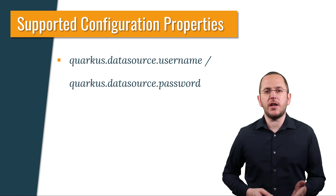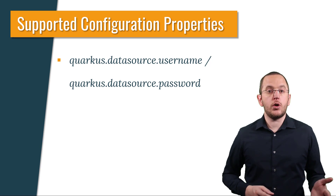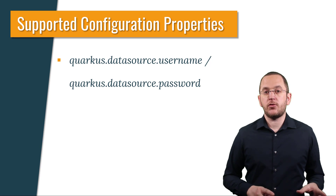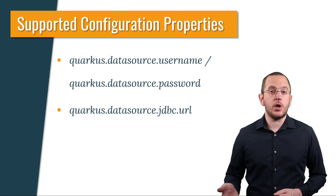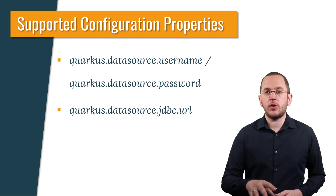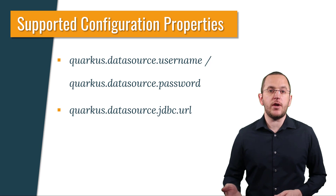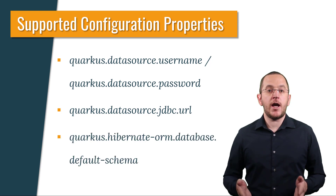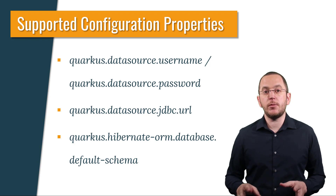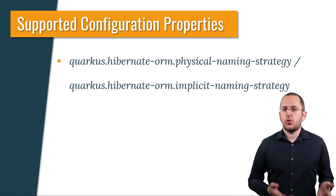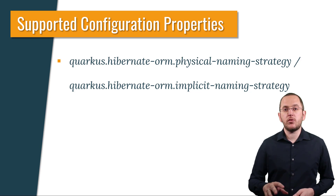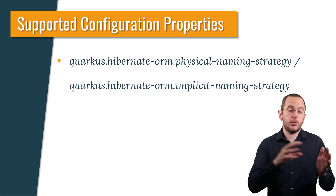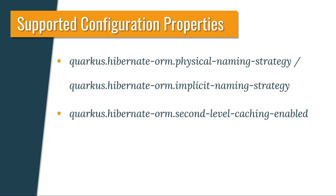Let's quickly summarize the most important configuration properties — you can find a complete list in the Quarkus documentation. quarkus.datasource.username and quarkus.datasource.password are the username and password that Quarkus shall use to connect to your database. quarkus.datasource.jdbc.url sets the JDBC URL that Quarkus shall use to connect to your database. Hibernate will automatically pick a matching dialect but requires a matching JDBC driver at runtime. quarkus.hibernate-orm.database.default-schema defines the default database schema to which Hibernate shall map the database objects.